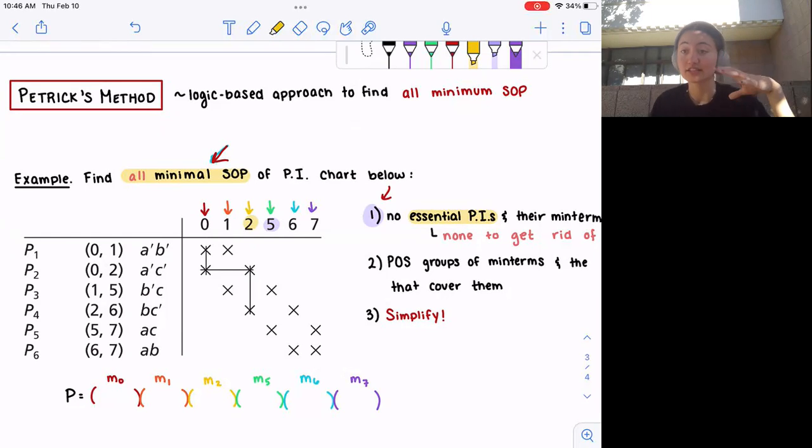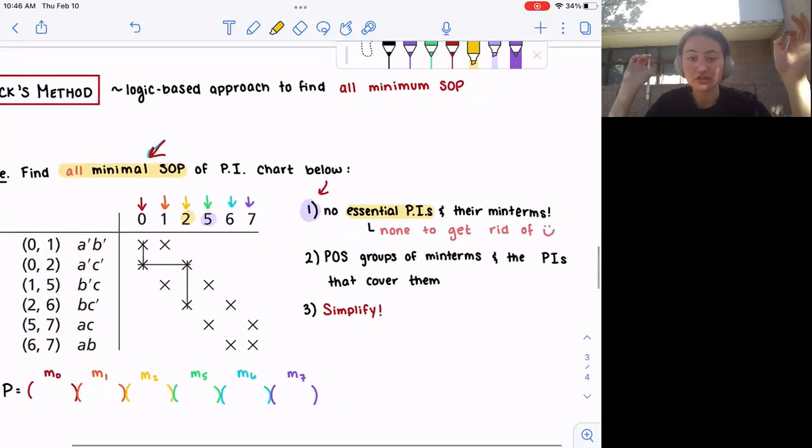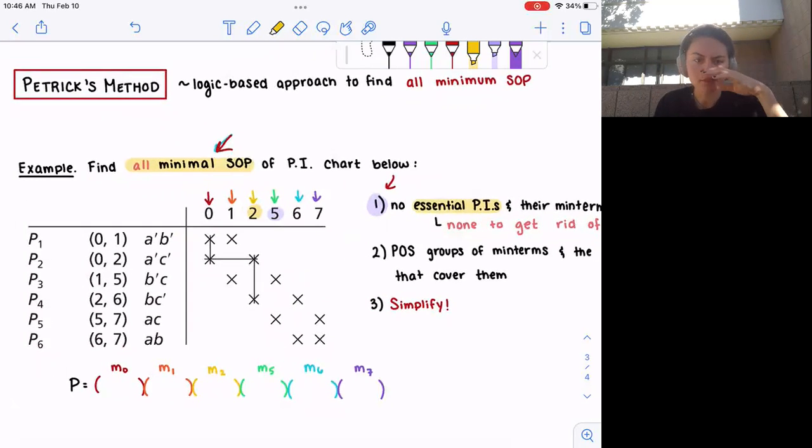How this works is, firstly, we have this prime implicant chart here that is different than the one we were working with earlier. Just keep that in mind. The first step is highlighted in purple, and we are going to make sure that we have no essential prime implicants and their minterms in our prime implicant chart, because essentially, the whole point of Petrick's method is finding out which combination of prime implicants that are non-essential that give us the most reduced sum of product form. We know that essential prime implicants are obviously going to be incorporated into every single one of our most reduced forms of a function, and so we just remove them.